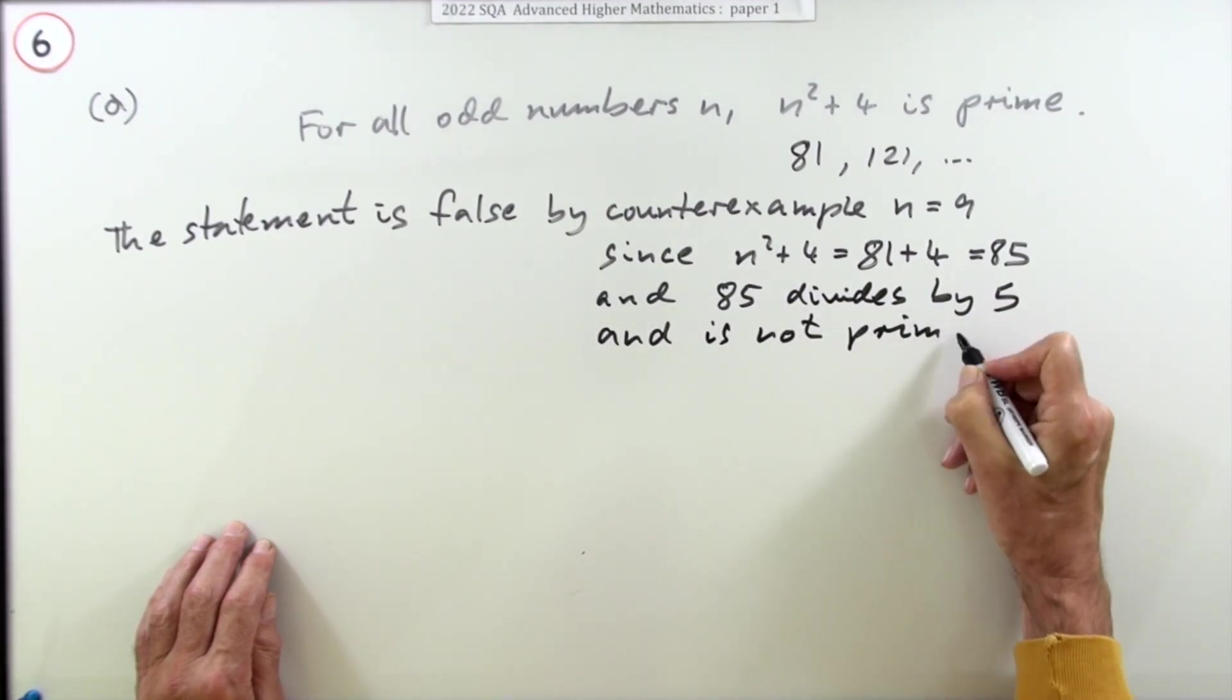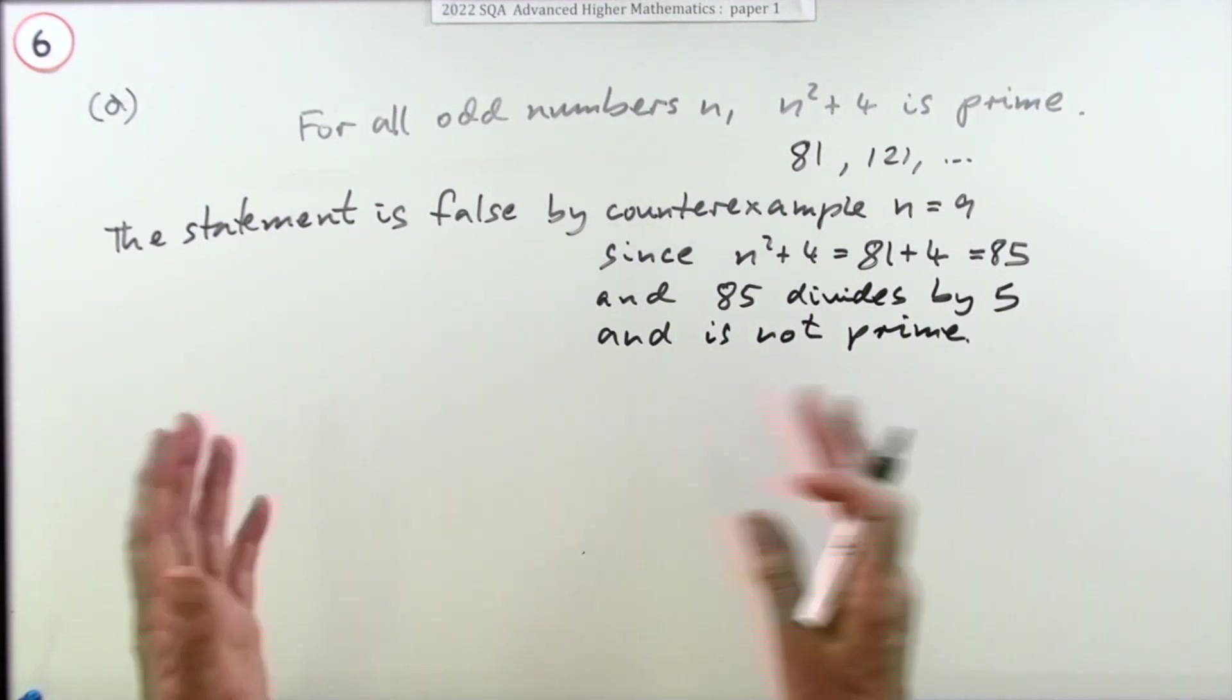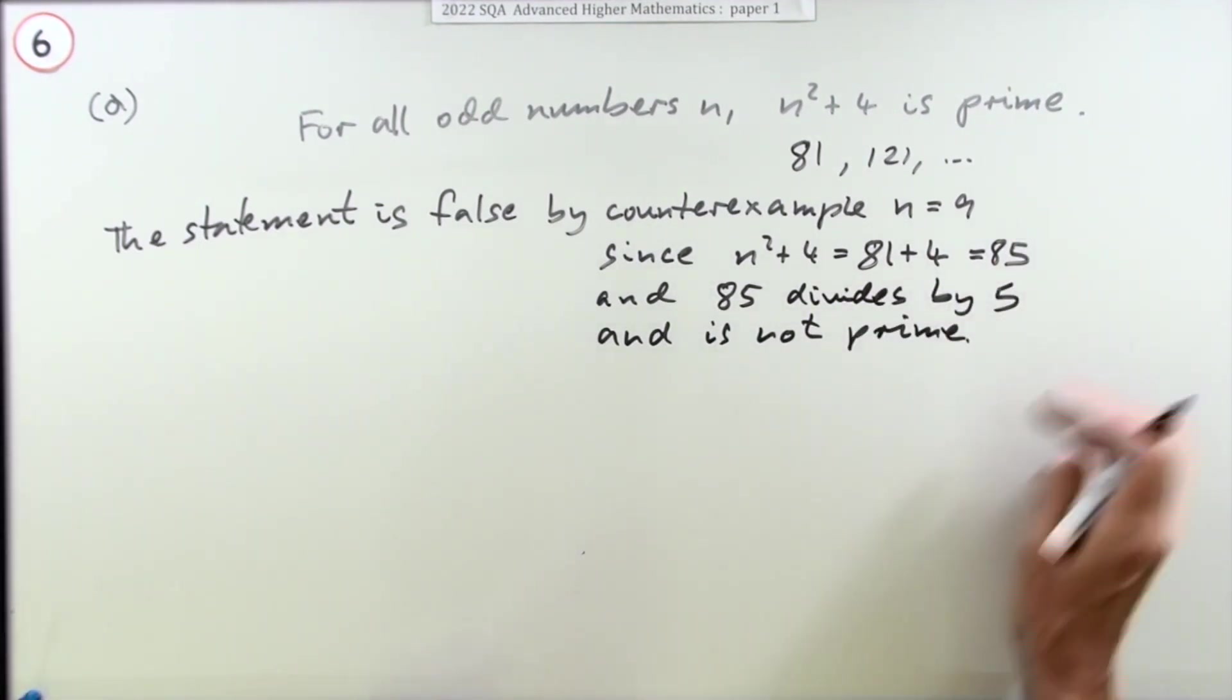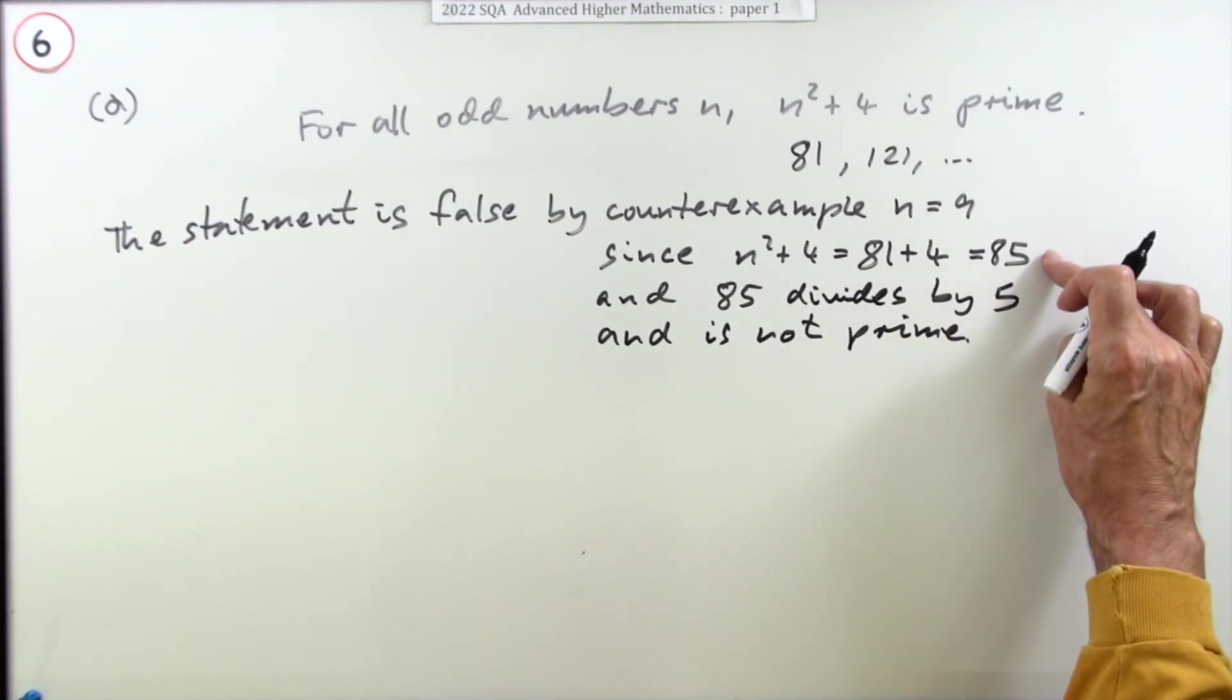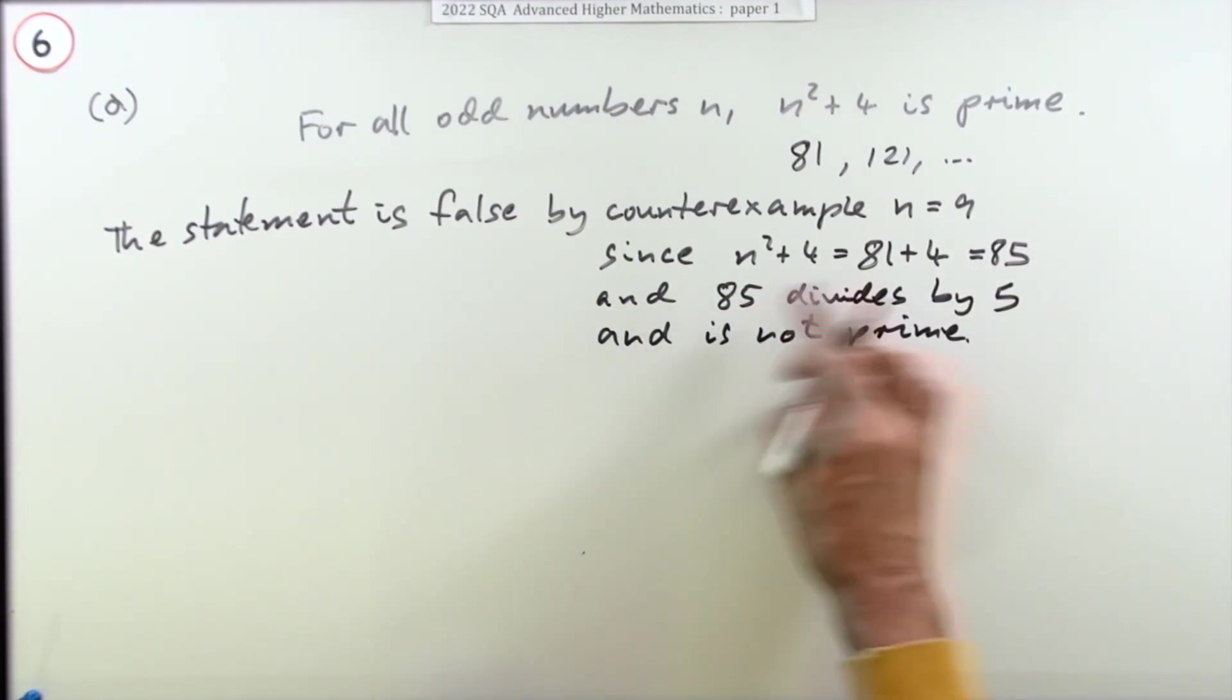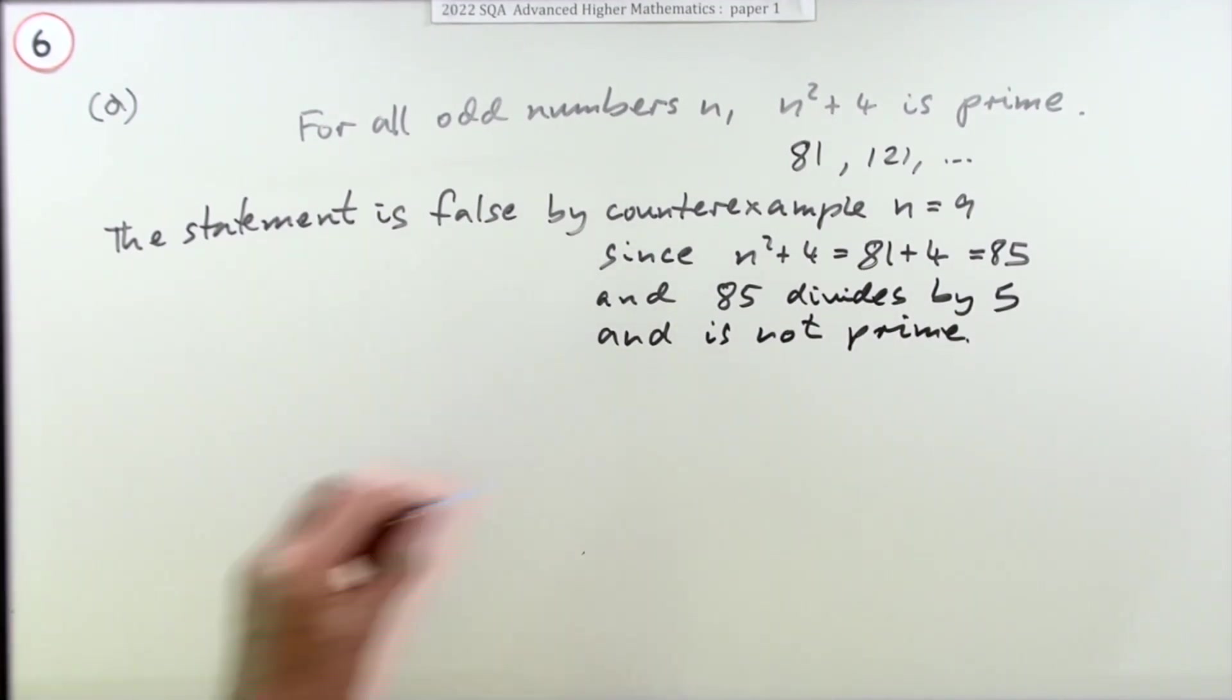Looks like an awful lot of writing. That's probably overkill, but you do need to have these three parts in your answer. You have to give the counterexample and give the reason. So you have to give that result and indicate by whatever means that it's not prime, and then and only then would you get that mark.